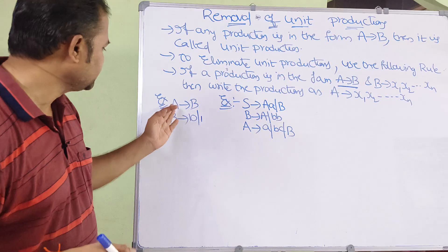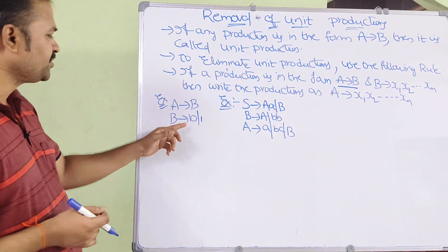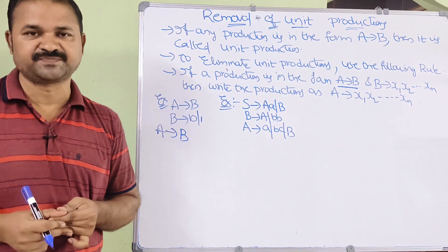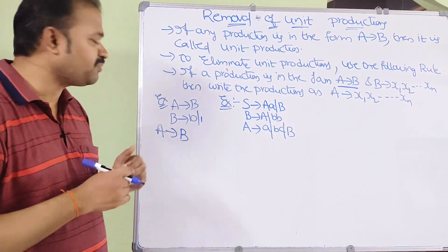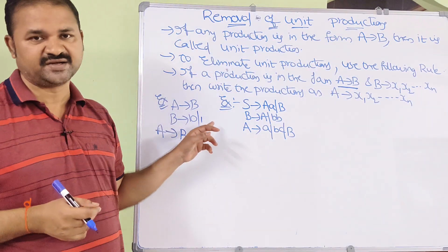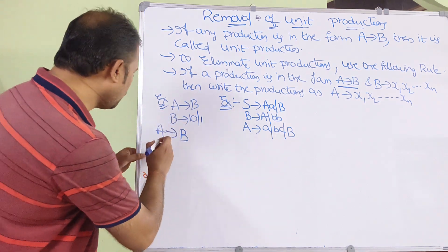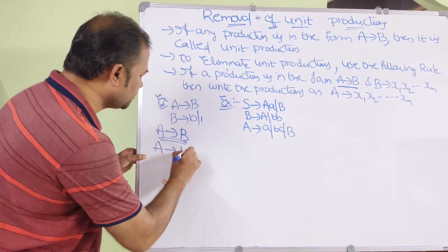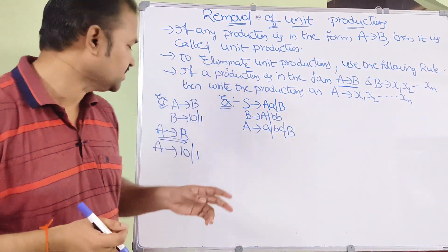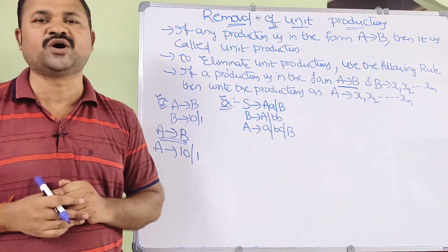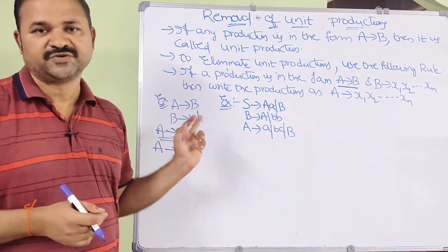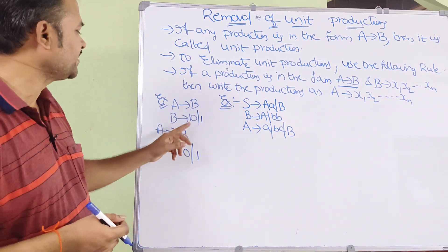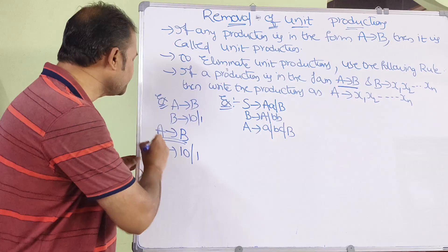Let's take a simple example. A produces B, and B produces 1 or 0. Here A produces B is a unit production. To eliminate it, we check B's production: B produces 1 or 0, so B is producing only terminal symbols. In place of B we write the productions of B. So the productions of A become 1 or 0. This is how we eliminate the unit production, giving us the final grammar.